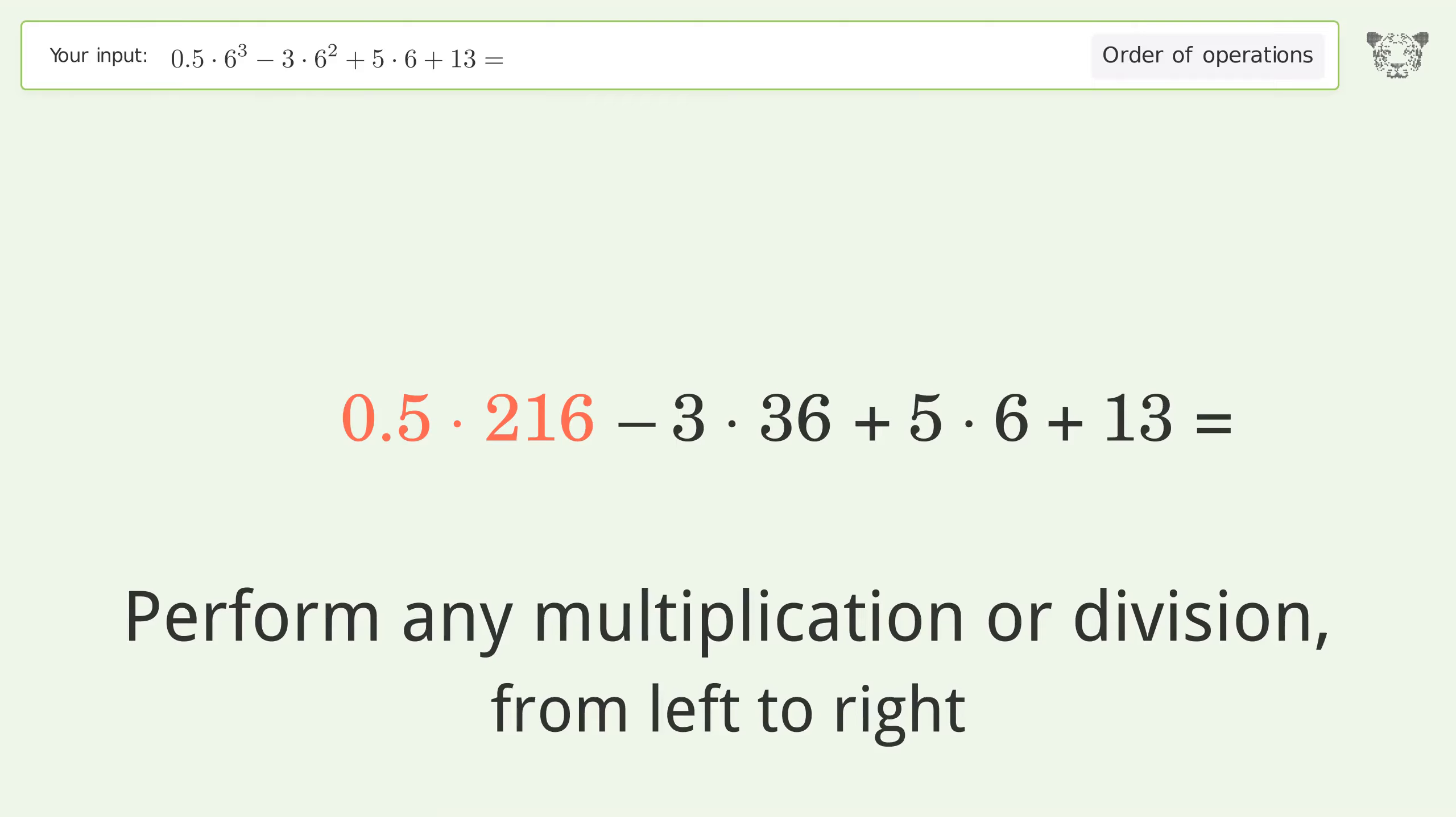0.5 times 216 equals 108. 3 times 36 equals 108. 5 times 6 equals 30.